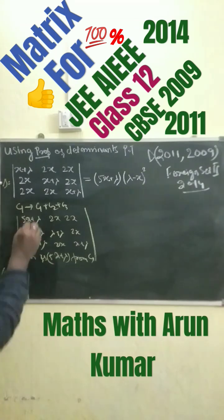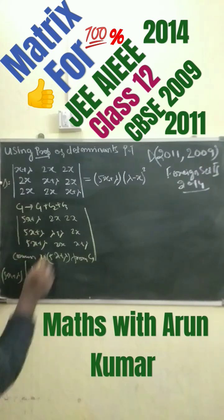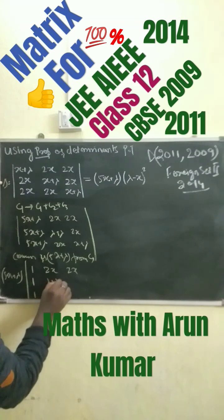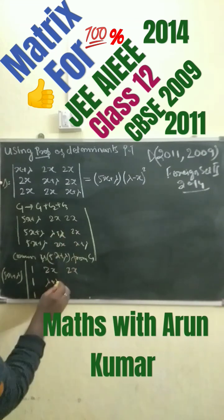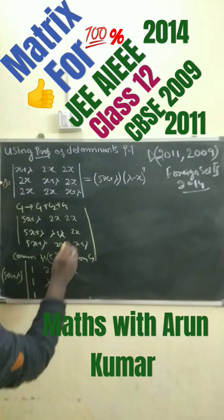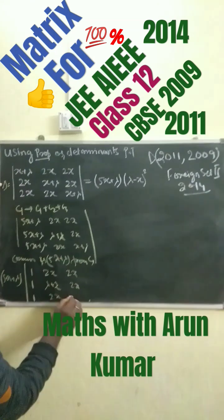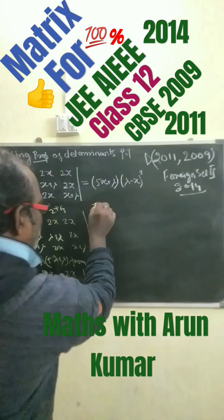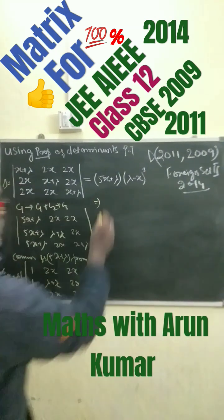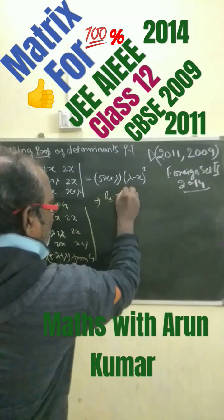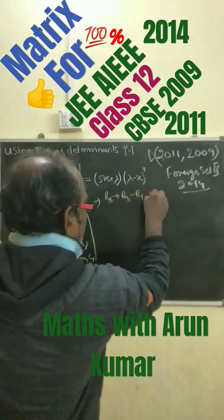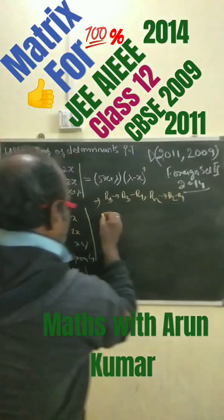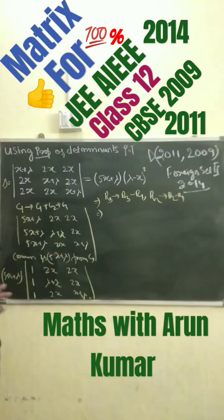We take 5x plus lambda outside, leaving the matrix with entries 1, 1, 1 in column 1, then 2x, 2x, x plus lambda, and 2x, 2x, x plus lambda. Now we apply row operations R2 minus R1 and R3 minus R1.